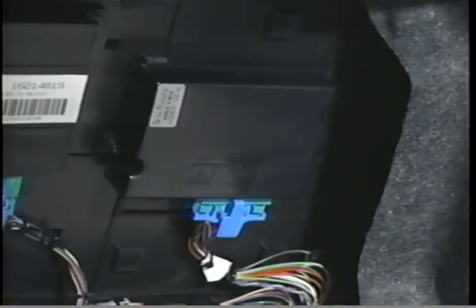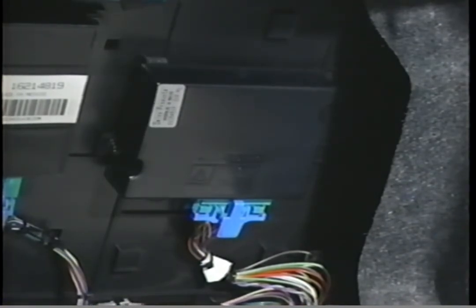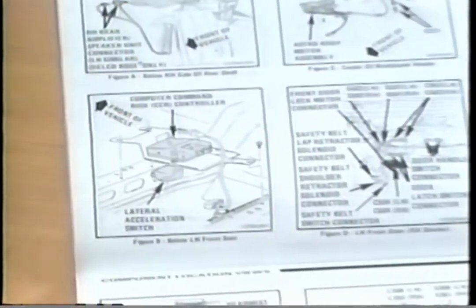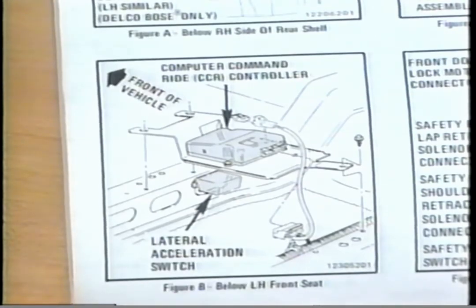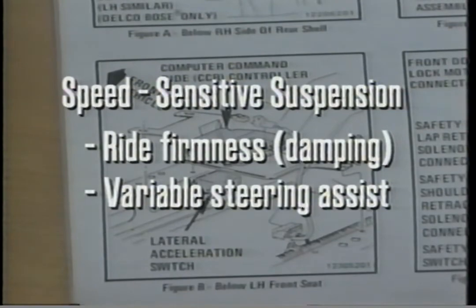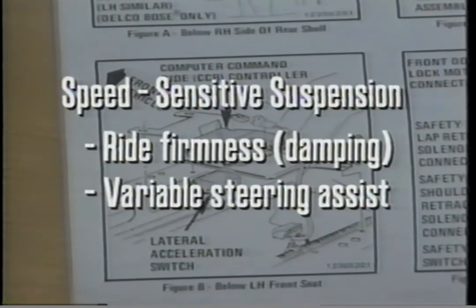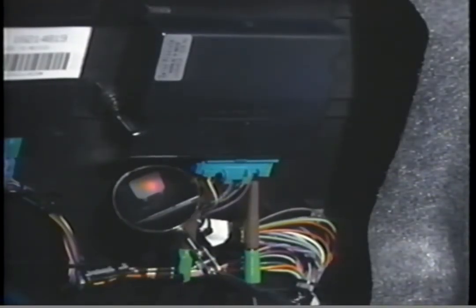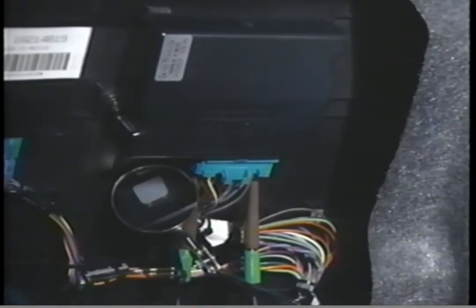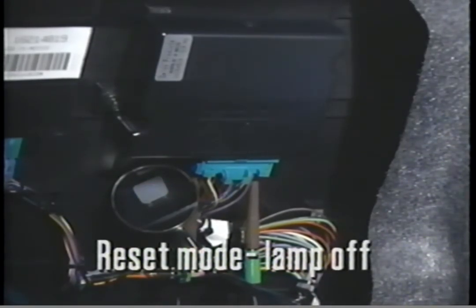Control modules are located in one place or another depending on model and year. Later models have it in the right side of the electronics bay. 4.9-liter DeVilles through 1993 have it under the driver's seat beneath the carpet. One and the same module controls both ride firmness and variable steering assist on 1993 or newer models with speed-sensitive suspension. The module goes through a self-test each time the ignition key turns on, also turning on its error lamp for about seven and a half seconds. In the reset mode, the error lamp stays off all the time — a signal that something is wrong with the control module.